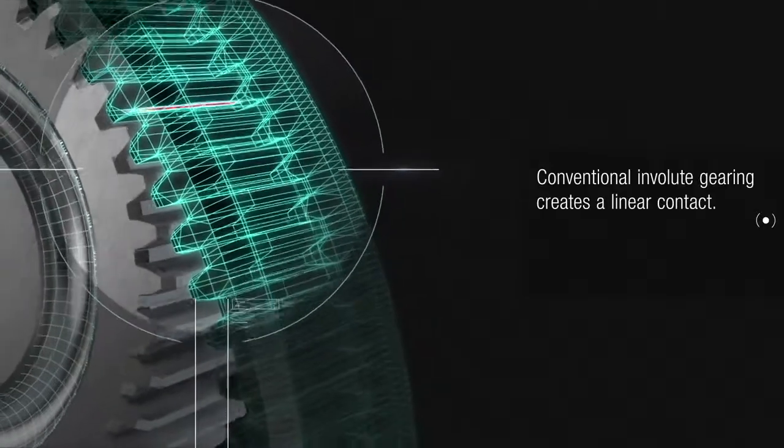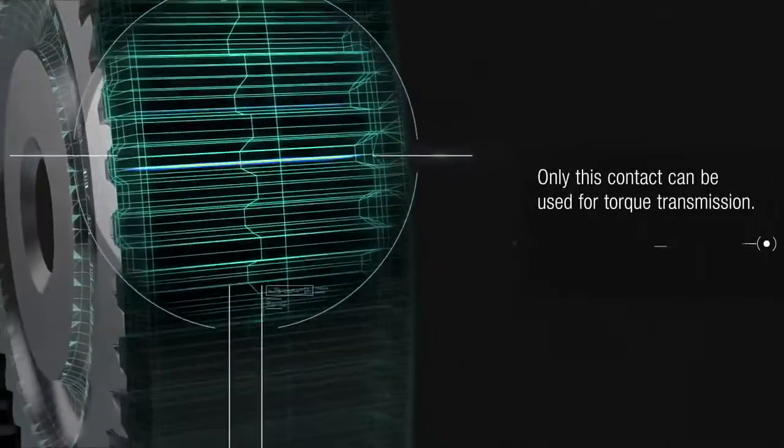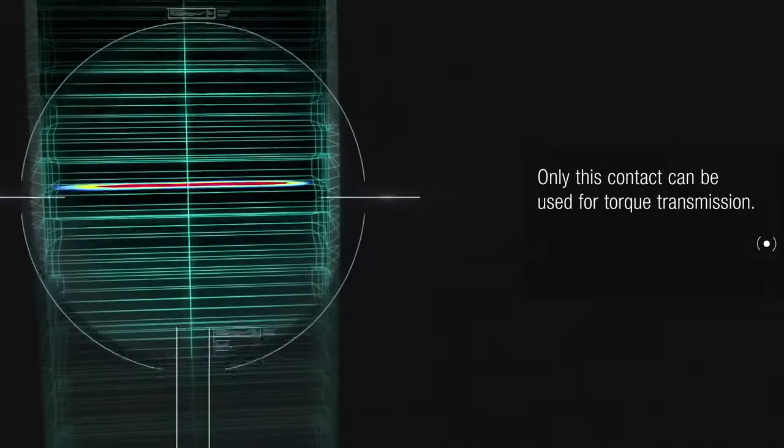Conventional involute gearing creates a linear contact. Only this contact can be used for torque transmission.